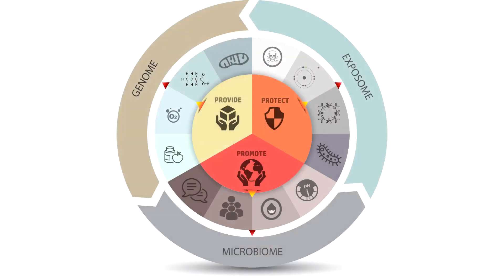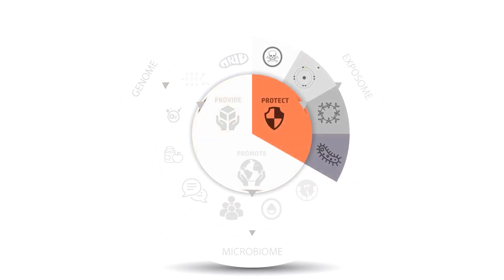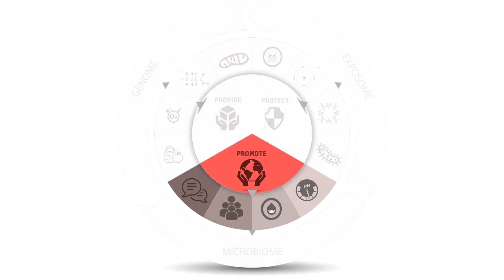In over a hundred people that have already taken this quiz, about 30 to 35 percent have scored highest in the provide section, suggesting that their cells are not getting enough energy. About 15 to 20 percent score highest in the protect section, suggesting that something is damaging or attacking their cells. The remaining 35 to 40 percent usually land in the promote section, suggesting that the environment for their cells is not optimal or their cells aren't communicating very well.